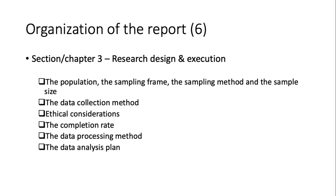In chapter three, you should explain how you designed and executed your social research. Provide details about the population, the sampling frame, the sampling method, and the sample size, and to what extent your sample represents the whole population. Introduce your data collection methods — surveys, experiments, field research, or secondary data. Discuss research ethics: informed consent, anonymity and confidentiality, and IRB approval. Also address the completion rate, how data is processed and coded, how missing data is handled, and your plan to analyze the data.